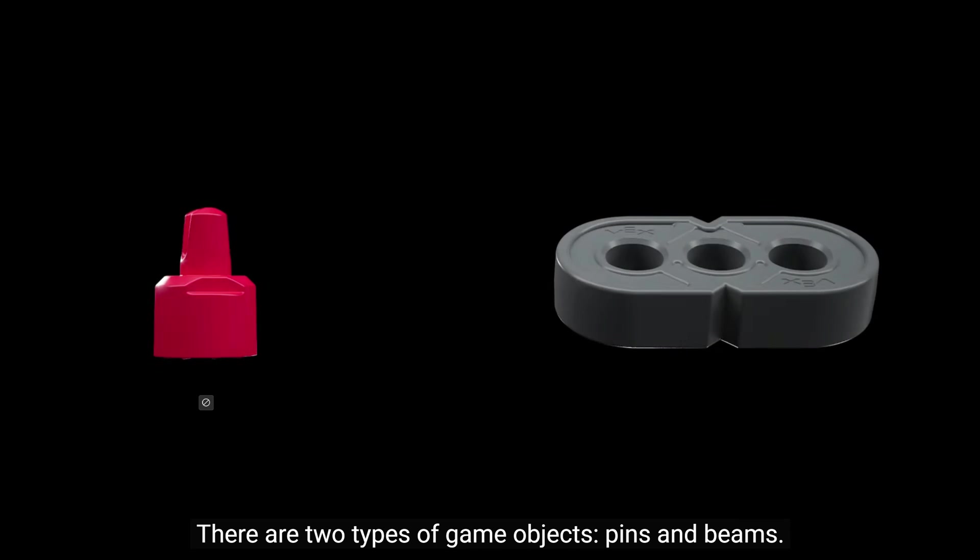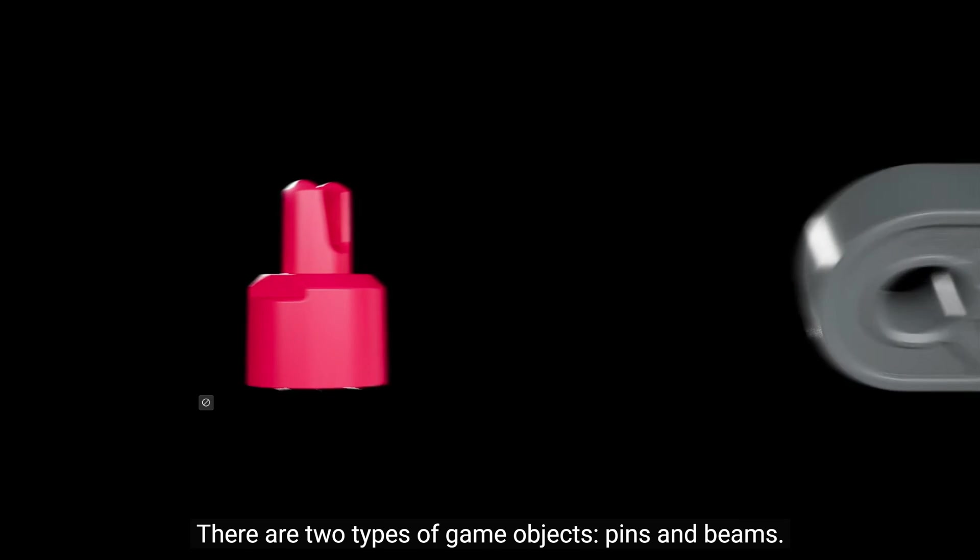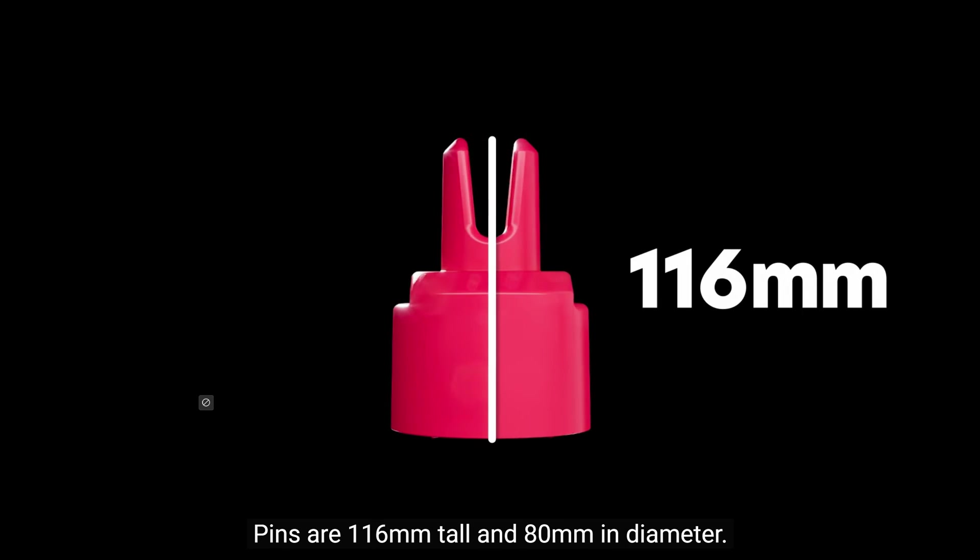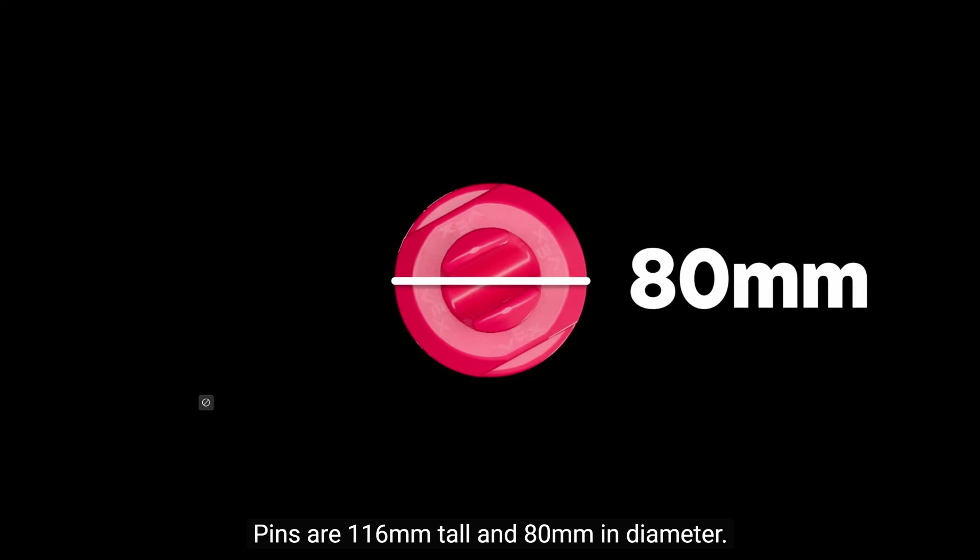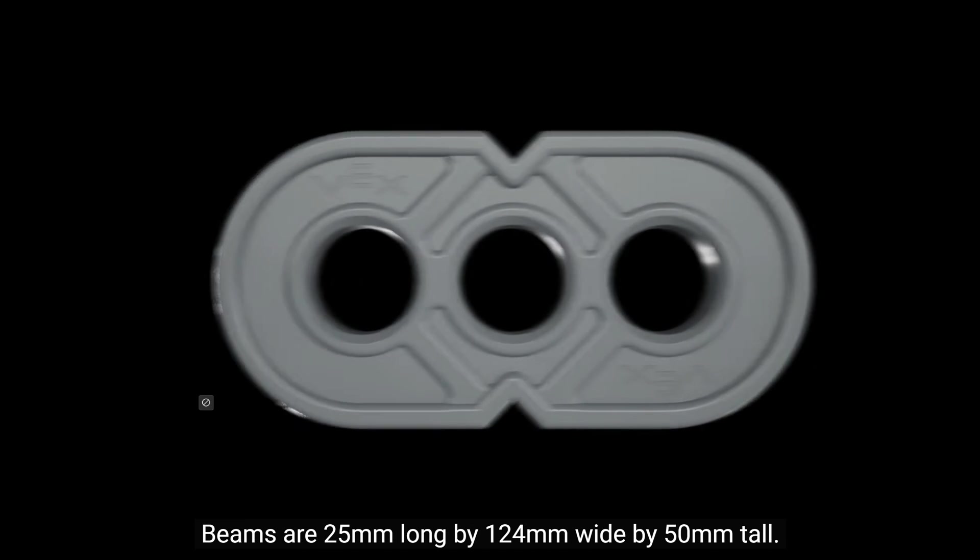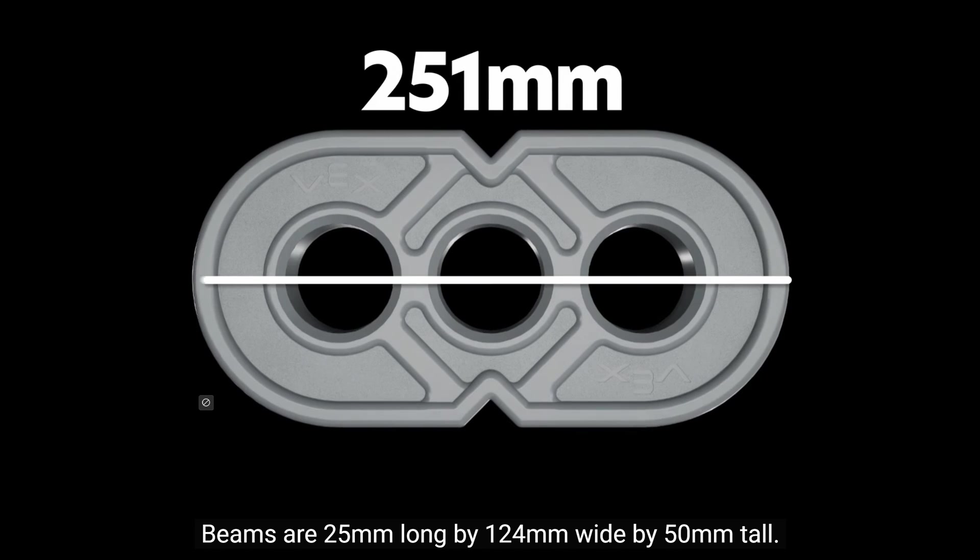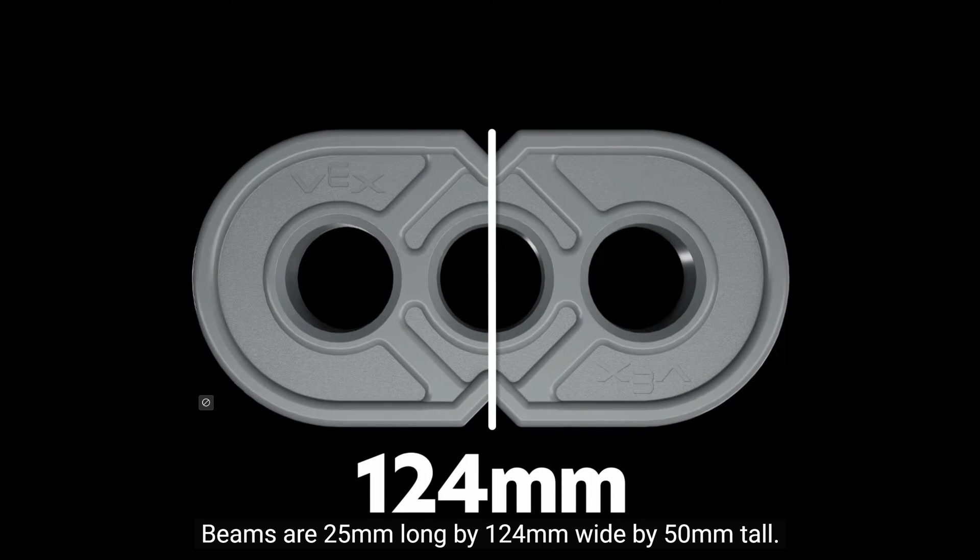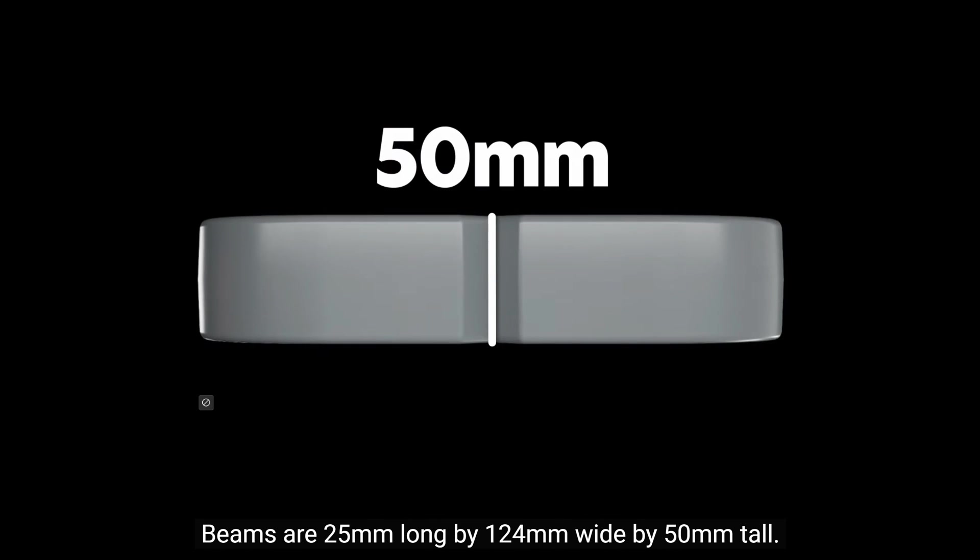There are two types of game objects: pins and beams. Pins are 116 millimeters tall and 80 millimeters in diameter. Beams are 251 millimeters long by 124 millimeters wide by 50 millimeters tall.